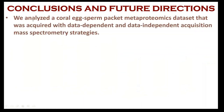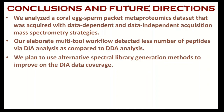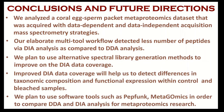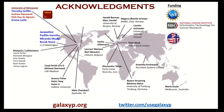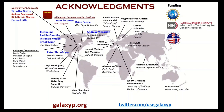In conclusion, we analyzed coral egg-sperm packet metaproteomics dataset acquired with two MS acquisition methods. Since our workflow detected fewer peptides with DIA analysis, we plan to use alternative spectral library generation methods to improve its coverage, which we believe will help us detect differences within control and bleach samples. We also plan to use alternative software tools to compare DDA and DIA analysis. Lastly, we would like to acknowledge our collaborators and funding agencies. Apart from the co-authors highlighted in blue, we would like to thank Peter Thorne from Scripps Research Institute. Thank you for listening and we look forward to your questions.